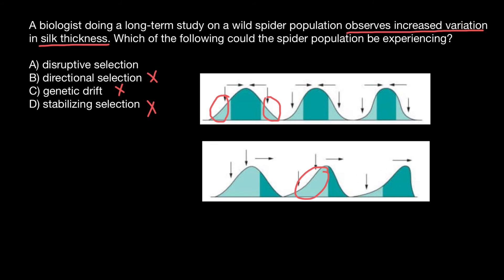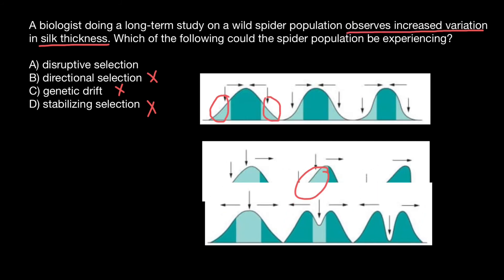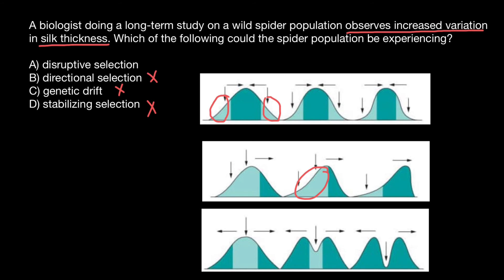Now let's take a look at disruptive selection. This last picture is a good example. Again, you see a vertical line. It works against this most popular phenotype, which is intermediate. But for some reason, phenotypes which are extremely thin or extremely thick would be more favorable than this intermediate.